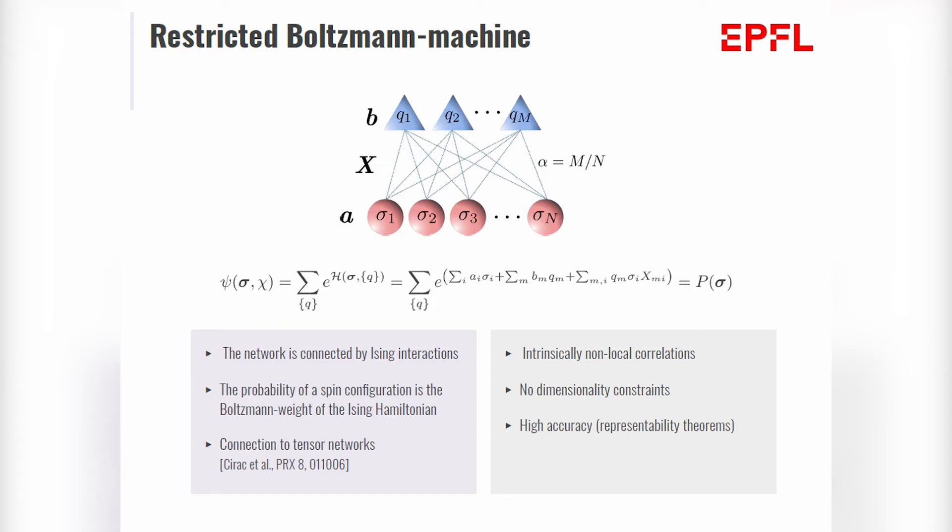Now, the advantages of this ansatz is easy to grasp. Since we introduced intrinsically non-local correlations, we expect to be good for highly correlated phases. We have no dimensionality constraints, and as representability theorem shows, the accuracy of our ansatz only depends on the number of hidden nodes we are using. So in the infinite limit of infinite hidden nodes, we can fit any function.